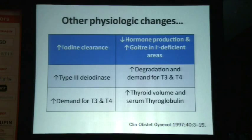Other physiological changes include increased iodine clearance by the maternal kidneys, which decreases hormone production and triggers a compensatory response — the mother's thyroid increases in size, producing a small goiter especially in iodine-deficient areas. The placenta has a type 3 deiodinase which inactivates both T4 and T3, increasing the demand for these hormones and requiring the maternal thyroid to work harder. Overall, thyroid volume increases, and because thyroid activity also increases, serum thyroglobulin levels may be slightly elevated in pregnancy.